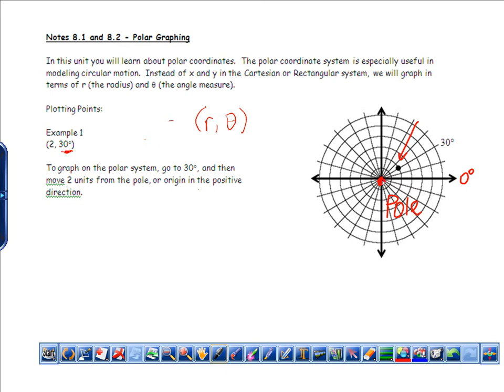Notice that I've kind of labeled some of the main things here. The pole, what we used to call the origin, we now call the pole. This line right here is called the polar axis, and that's where 0 starts, and we go counter-clockwise, just like how we did on the unit circle. So the point (2, 30°) is 2 units away, or the radius is 2, 2 units away from the pole, and it's 30 degrees from 0.